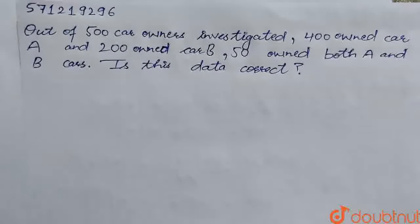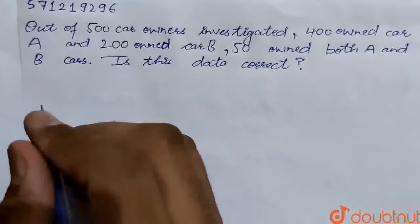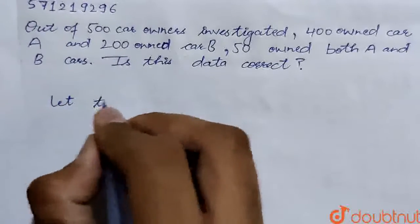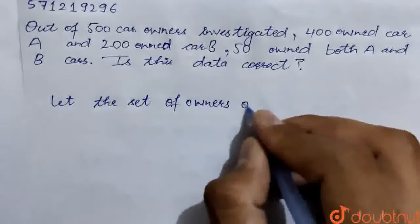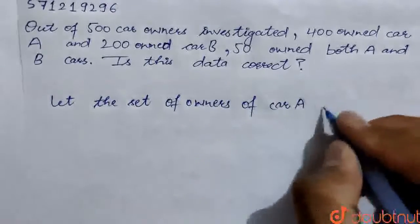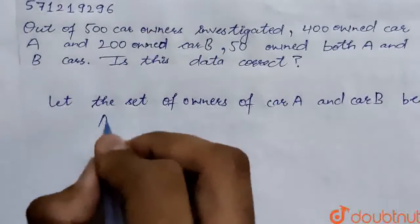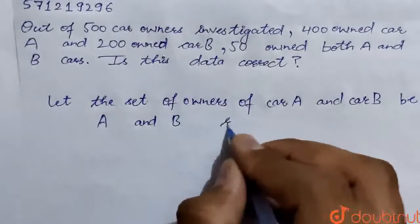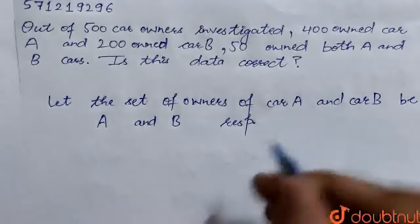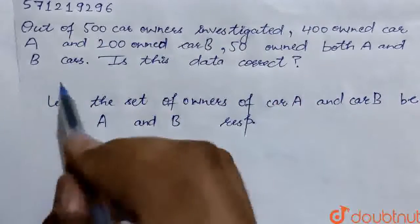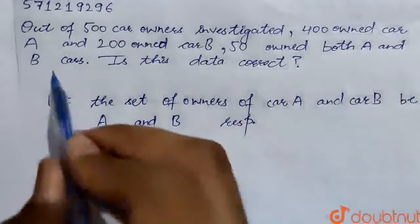Hello students, in this question we have to check whether the given data is correct or not. First, we will let the set of owners of car A and car B be represented by A and B respectively. We are given that out of 500 car owners investigated, 400 own car A, 200 owned car B, and 50 owned both car A and B.